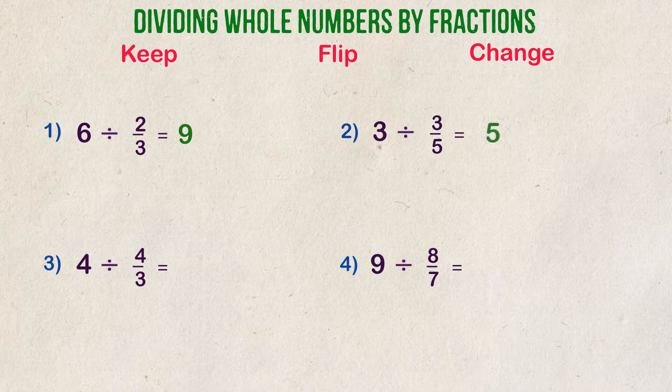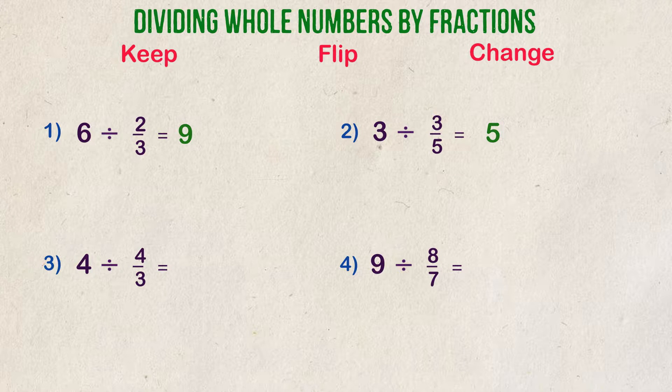Example 3. What is 4 divided by 4 thirds? So, in this example, we're going to divide a whole number by an improper fraction. But that doesn't matter. The process is exactly the same. We start by putting 4 over 1. We flip 4 thirds to be 3 fourths, and we change the sign to multiplication.